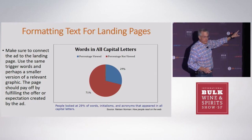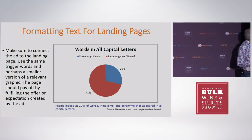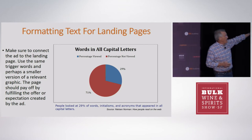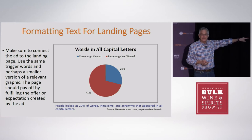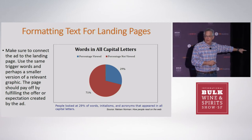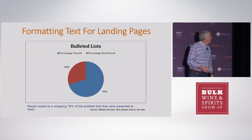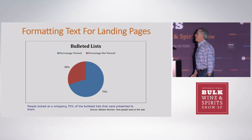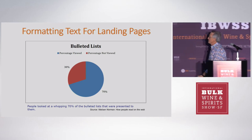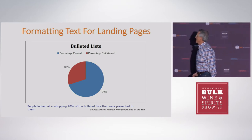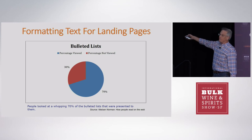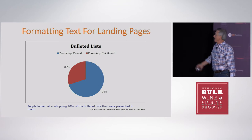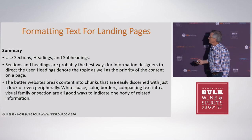If you put stuff in all capital letters, people are not going to read it — 71% of people did not read text in all capital letters. Second: bulleted lists. If you don't have lists that are bulleted, people are not going to view it. In this particular case, 70% of people viewed bulleted lists.